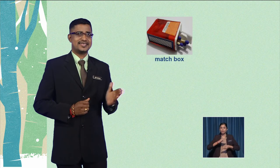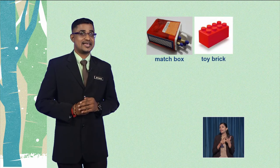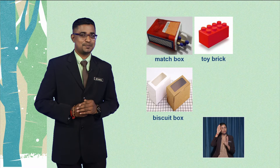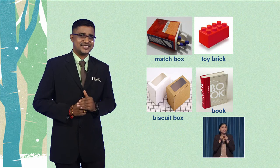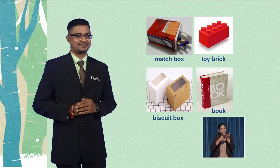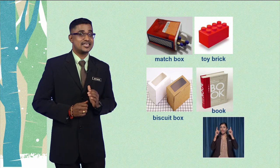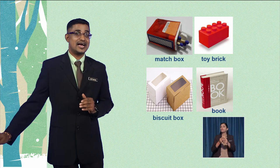Now, let's look at these pictures. The first object is a mesh box. The second picture is a toy brick. The third one is a biscuit box. And finally, the last picture is a book. Can you find any similarity in these pictures? Very good! These objects share the same 3D shape. It is called a cuboid.